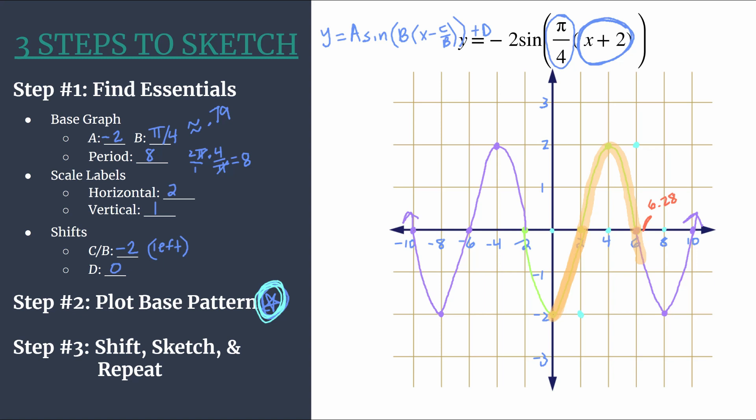Remember when in doubt you can always substitute in a value for x and calculate what y you get and make sure that that point is on the graph that you've graphed. So this was the three steps to sketch method for a sine equation that had a phase shift. Check out the links in the video description. There are links to tons more examples of sine as well as examples of some other trig functions. So keep practicing and thanks for watching.